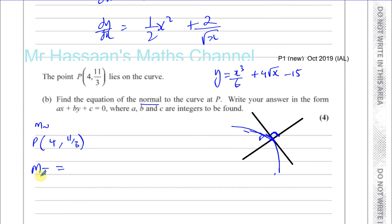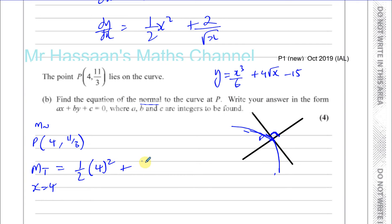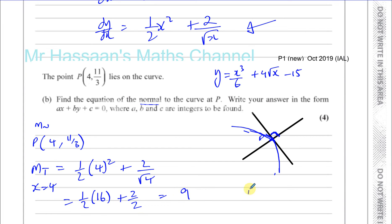When you substitute x equals 4 into the gradient function, it tells us the gradient of the curve at that point. So we have a half times 4 squared plus 2 over the square root of 4, which gives a half times 16 plus 2 over 2, that's 8 plus 1, which is 9. So the gradient of the tangent is equal to 9.